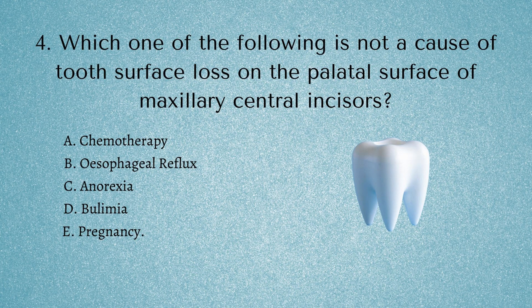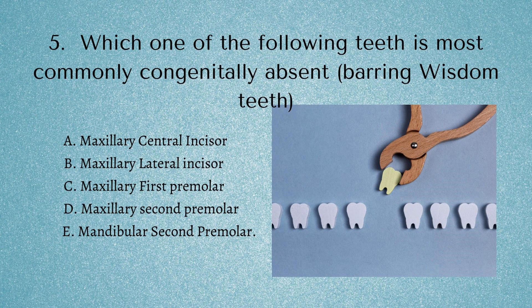Question 5, our final question: Which one of the following teeth is most commonly congenitally absent, except for wisdom teeth? Is it A) the maxillary central incisor, B) the maxillary lateral incisor, C) the maxillary first premolar, D) the maxillary second premolar, or E) the mandibular second premolar? Like the ortho question before, it's one of those things you either know or you don't. The answer is the mandibular second premolar — the lower fives are the next most commonly congenitally missing teeth. The maxillary lateral incisors are the red flag there, and a few people would probably go for that answer.